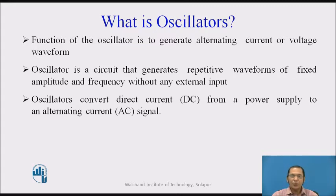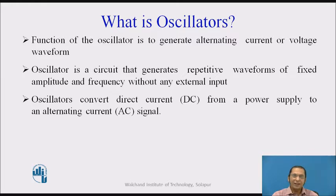One may ask: how is it possible to generate any output without any external input? It is possible for the oscillator circuit because we are connecting a DC supply as a power supply, and that DC power supply is getting converted — the power from the DC supply is converted into an alternating current AC signal.